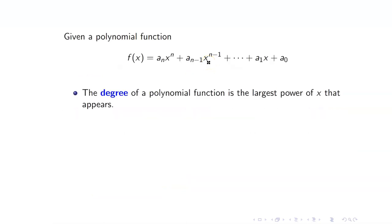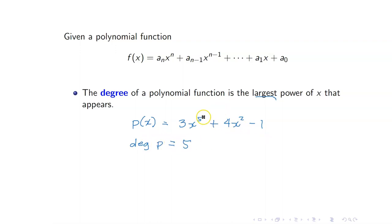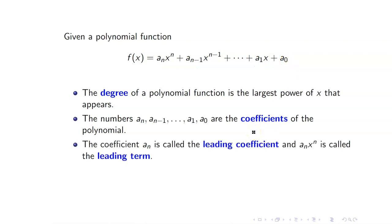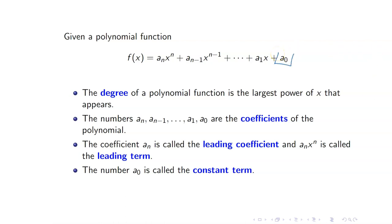Let us define a few terms. First, we say that the degree of a polynomial function is the largest power of x that appears. Going back to p of x equals 3x⁵ plus 4x² minus 1, the degree of p is equal to 5. We also call a_n the leading coefficient, and the term a_n times x to the n is the leading term. The number a_0 is your constant term, because it doesn't have any variable appearing in it.